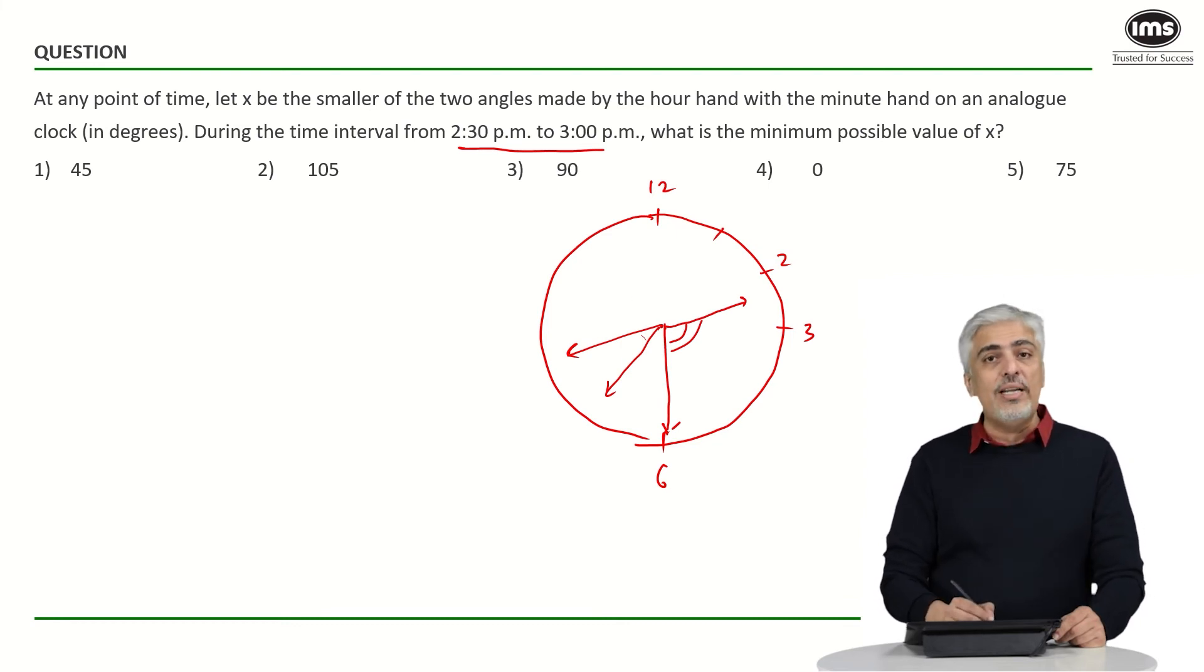And the smallest value for that angle, or the smaller angle, if this keeps going, will be exactly at 3 p.m. So exactly at 3 p.m. we will get the smallest angle. And before that, there will be nowhere else where the angle will be less than 90. So the answer is clearly 90 degrees, a very straightforward question.